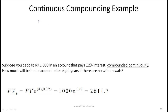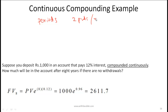Let us now talk about the concept of continuous compounding. With continuous compounding, there is no concept of number of periods. So earlier we said two periods per year or four periods. Now with continuous compounding, these concepts don't exist.